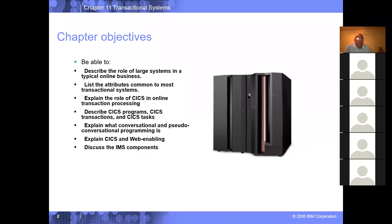So what we're going to do in all this chapter, chapters six and seven were about batch processing. Chapter 11 is about online processing or transaction processing. Online and transaction are synonymous. We'll describe the role of large systems in a typical online business, list attributes common to most transaction systems, and explain CICS.